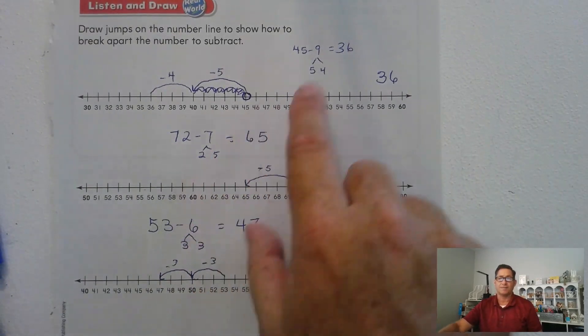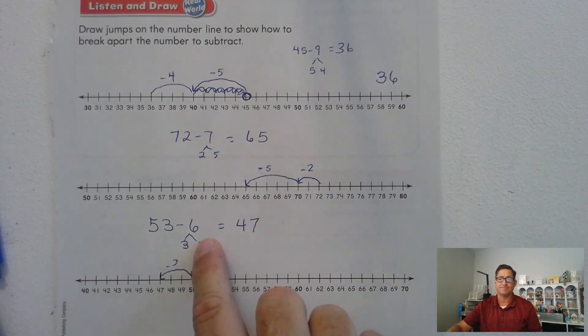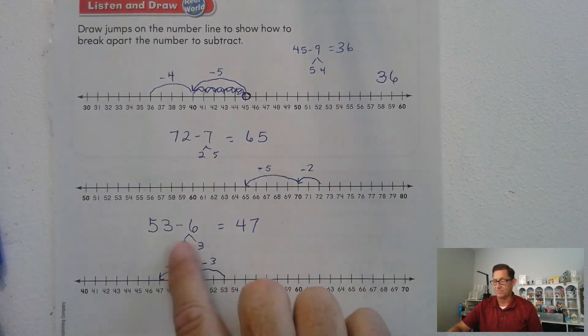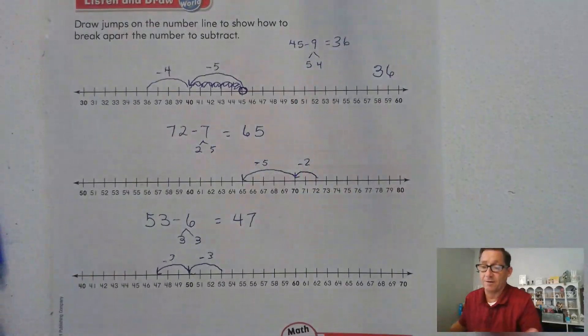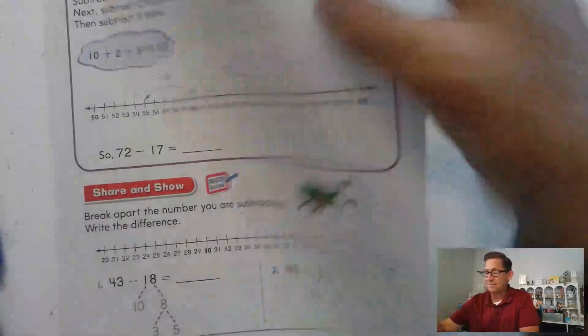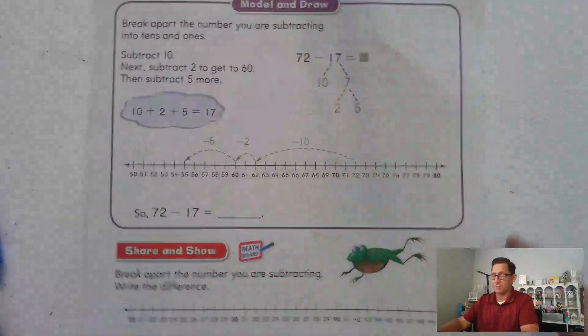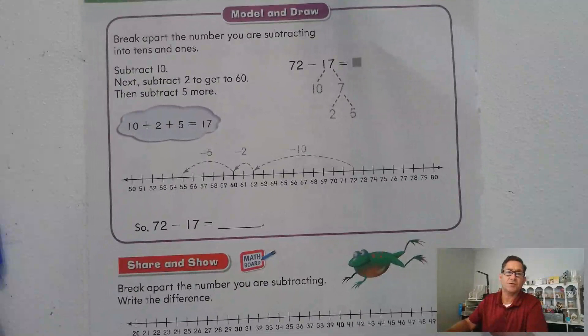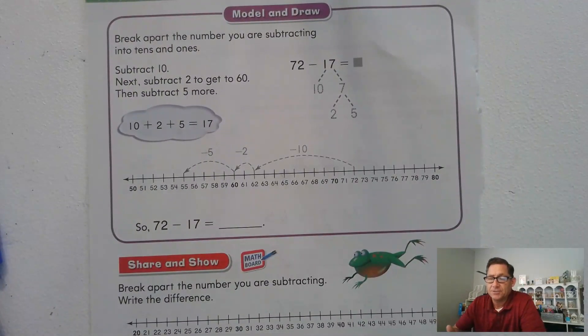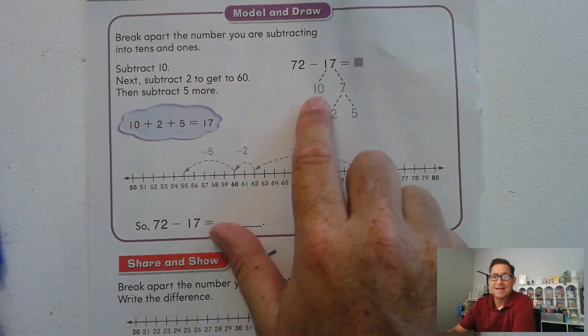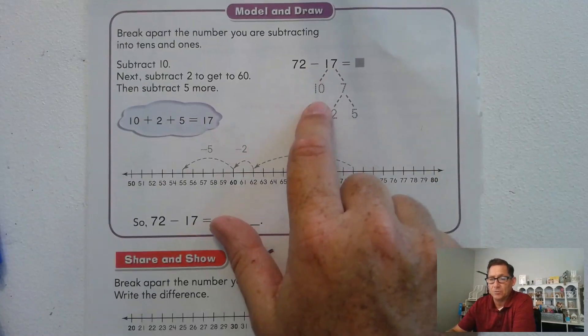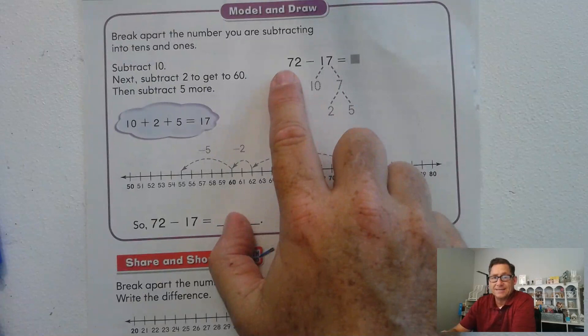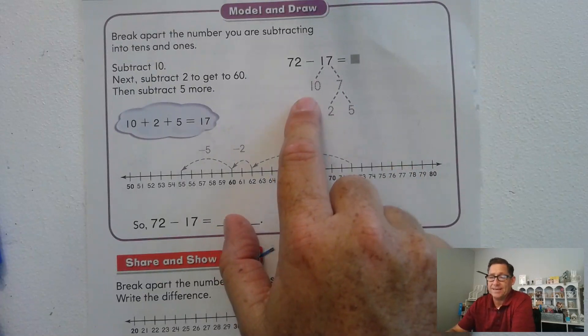What we did was we broke apart the number that we're subtracting. In this case, we subtracted to get 10s. So that was kind of a repeat of what we learned in our last lesson. Now, what happens if we have a two-digit number that we're subtracting? We'll break apart the number you're subtracting into 10s and 1s. When we subtract 10, the 1s place doesn't change. 2 minus 0 is just 2. 7 tens take away 1 ten. That's 6 tens.